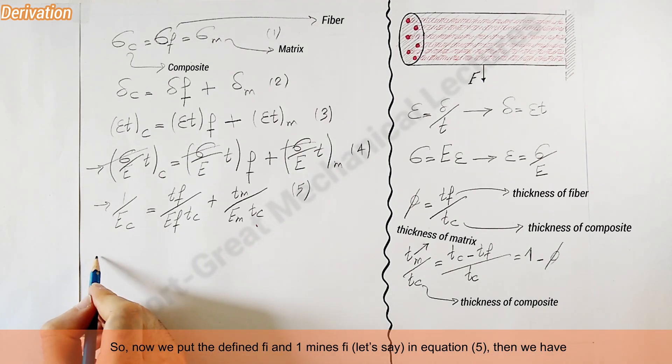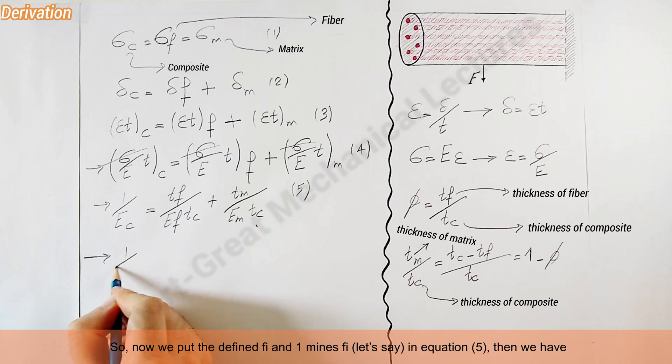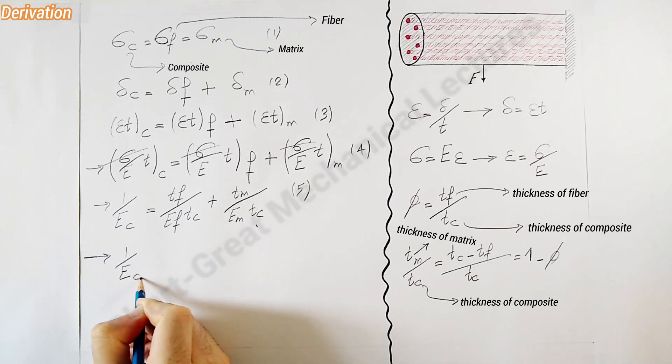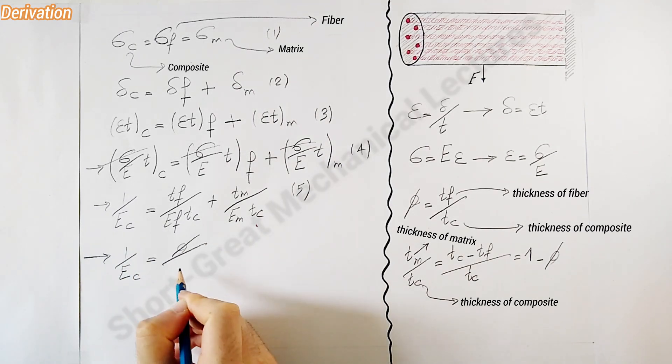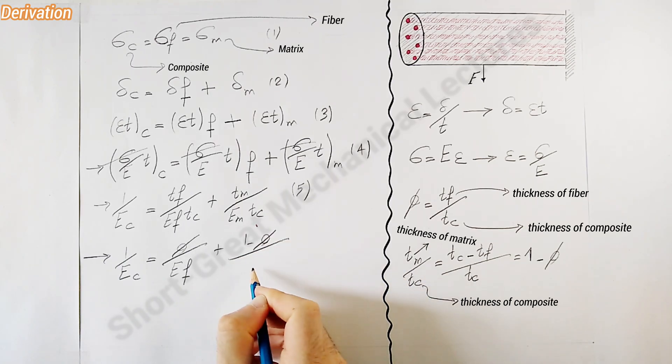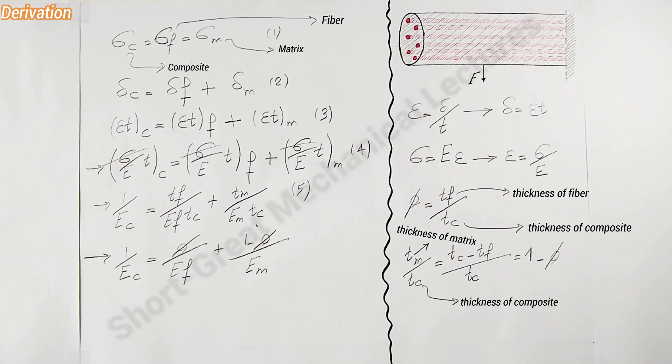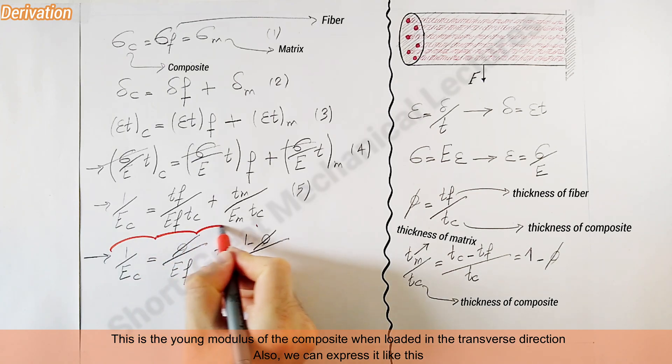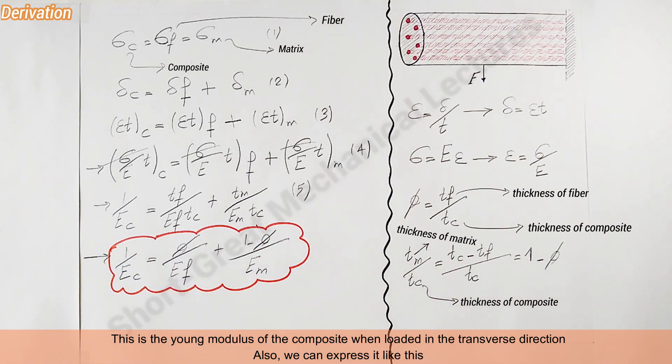So now we put the defined phi and one minus phi into equation five. This is the Young's modulus of the composite when loaded in the transverse direction. Also, we can express it like this.